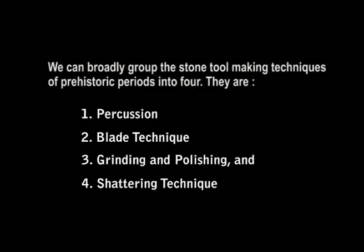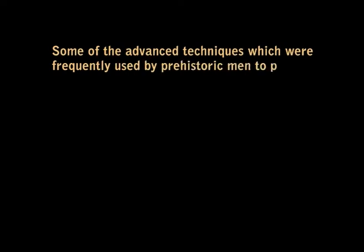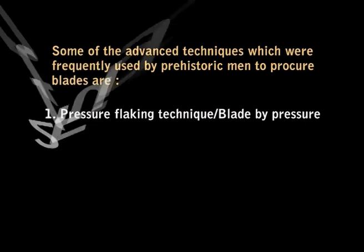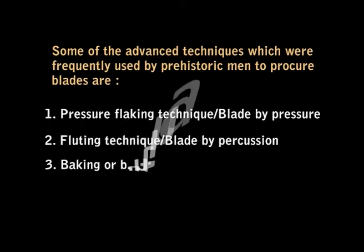The next tool-making group is the blade technique. This is the technique known to men for the first time during the middle Paleolithic. By this method, long, narrow, thin, and parallel-sided flakes have been produced in different parts of the world during the Paleolithic period. But this technique has been regularly and extensively used during the upper Paleolithic, Mesolithic, and later periods. Some of the advanced techniques frequently used by prehistoric men to procure blades are: pressure flaking technique, or blade by pressure; fluting technique, or blade by percussion; and lastly, backing or blunting.